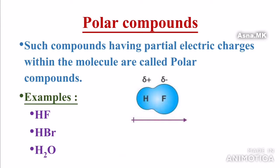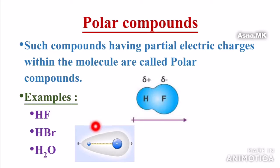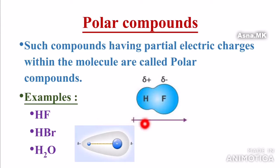In HF, fluorine has a higher electronegativity and attracts electrons, making fluorine delta-negative. In HBr, bromine is delta-negative and hydrogen is delta-positive.